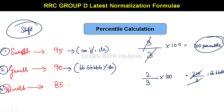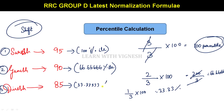Then just tell us — 58 scans. 95 scores: 1 by 3 into 100 may be 33.33 percentile. 33.333 percentile. Simple. That's it. If you have a raw score, you can see it — divided by total number of candidates into 100.